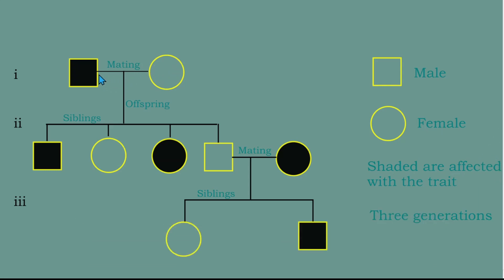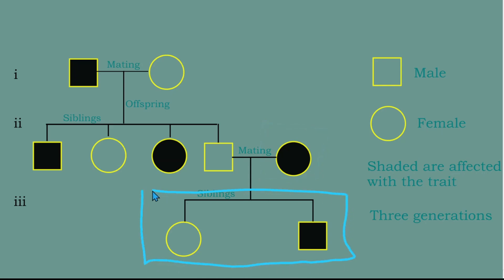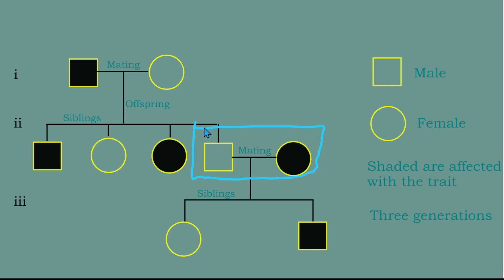These lines represent different relationships. This line represents a marriage — this male and this female were married. This line shows the offspring. This sibling line connects the siblings. Here we have four siblings — two males and two females. This individual is not one of the siblings but married one of them, and together they have two children.